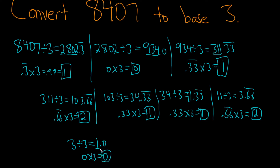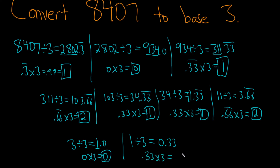Then you take the 1. You've got to keep going until there's no whole part. So you do 1 divided by 3, that's going to be 0.33. So you do 0.33 times 3 to figure out the remainder, which is 1. And so for the final answer, you read the remainders backwards.